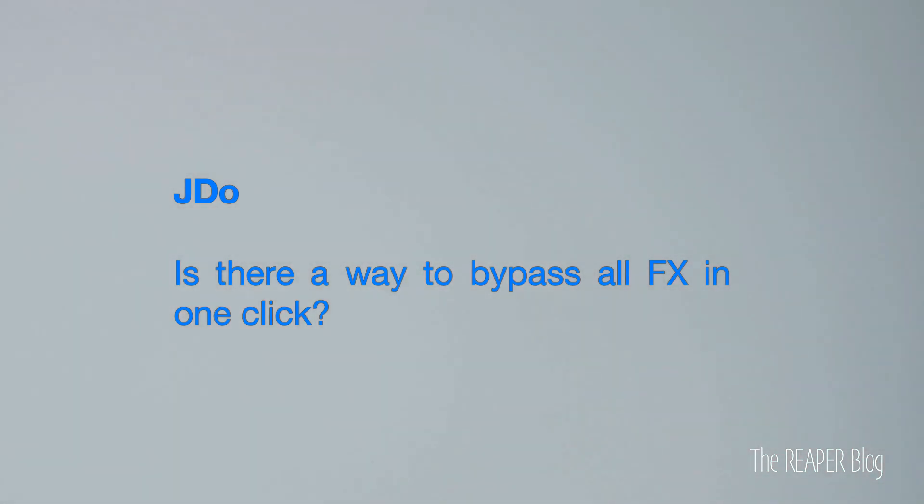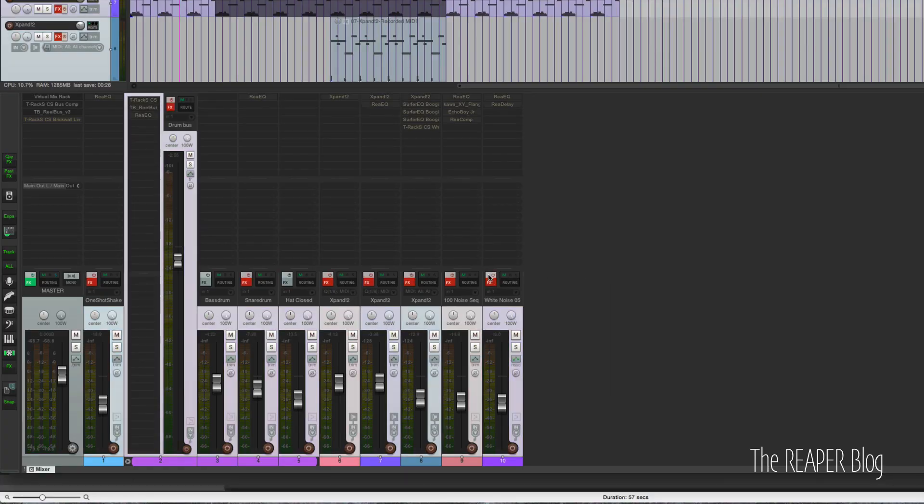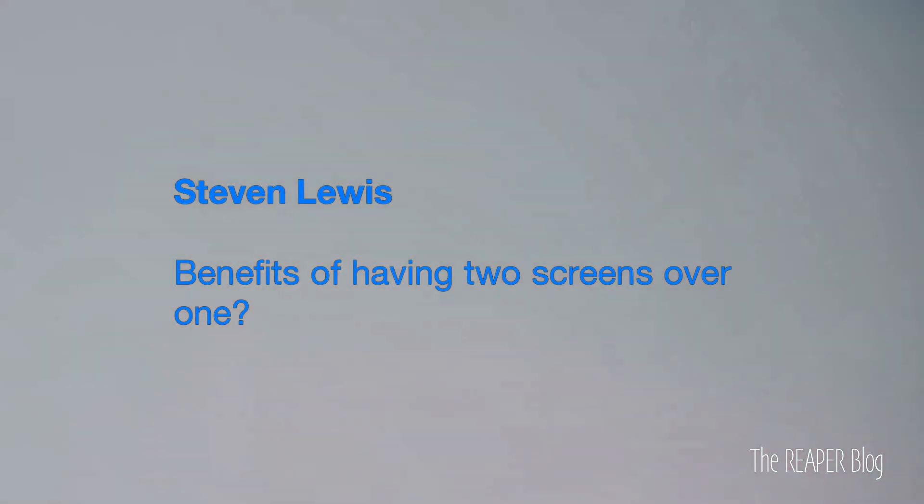JDO asks: is there a way to bypass all effects in one click? You'll have to use the keyboard — press Command-A (or Control-A on PC) and press the power button on any of the tracks. So you're selecting all with Command-A and clicking the power button for the effects chain, which bypasses them. That's only going to do selected tracks, not the master, but that's just one more click. You can set up a custom action that will select all tracks and bypass the effects chains in one click — and you can probably include the master with that too. You can assign that action to a toolbar button for easy access.